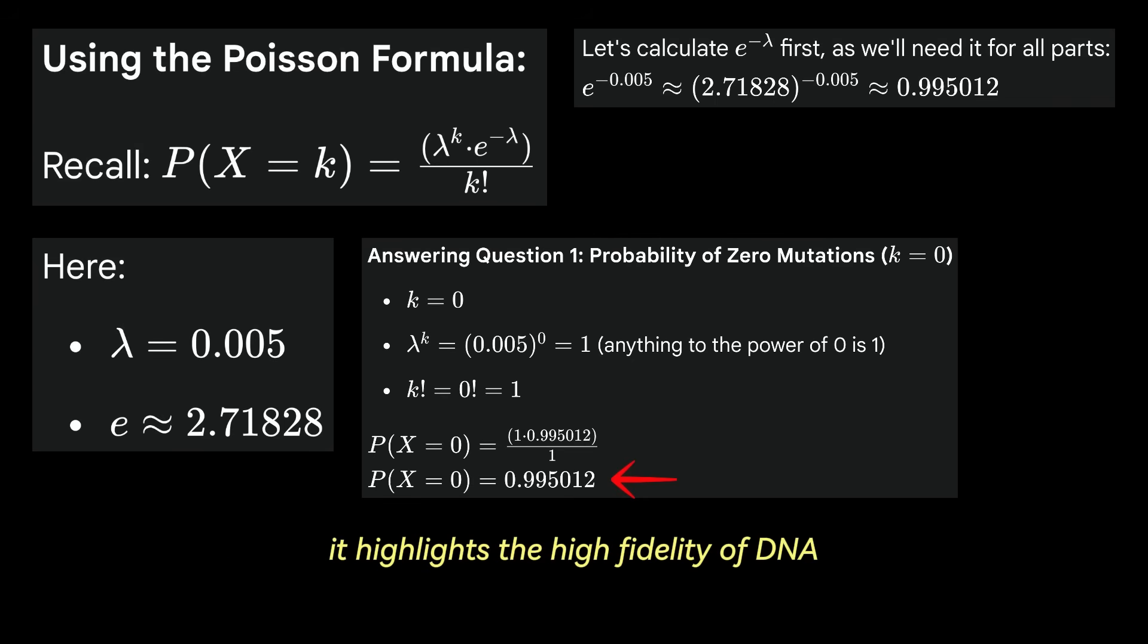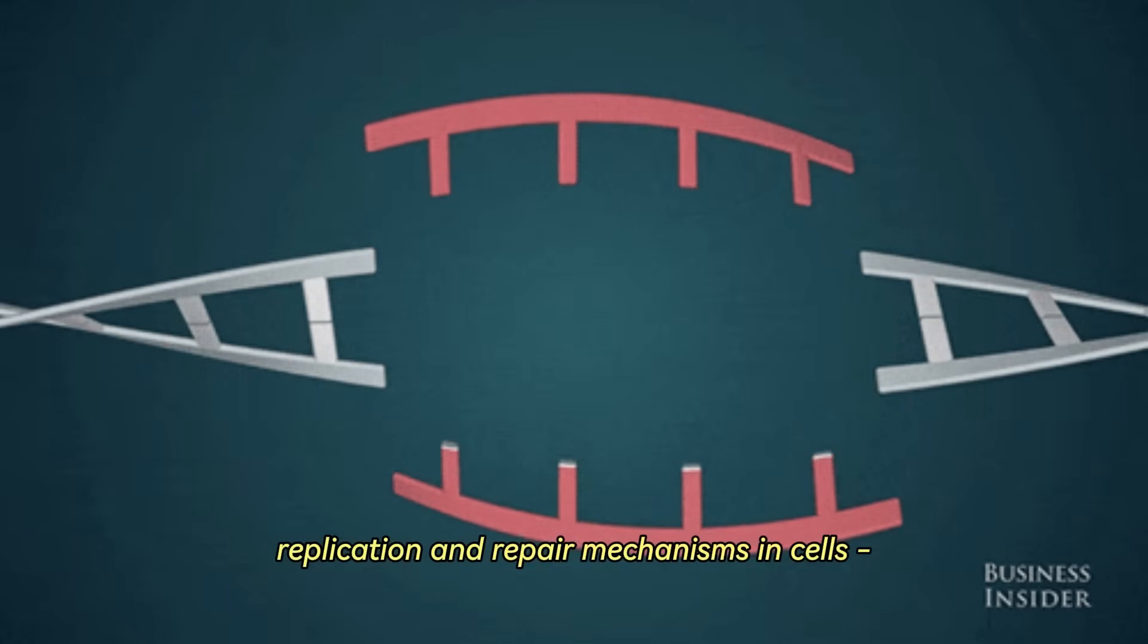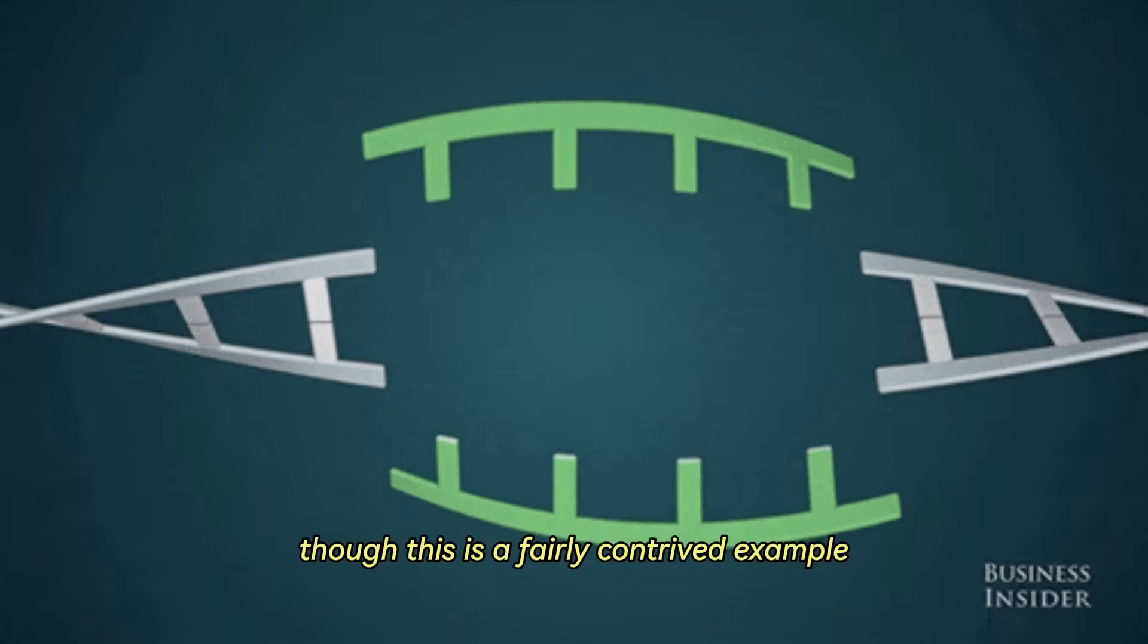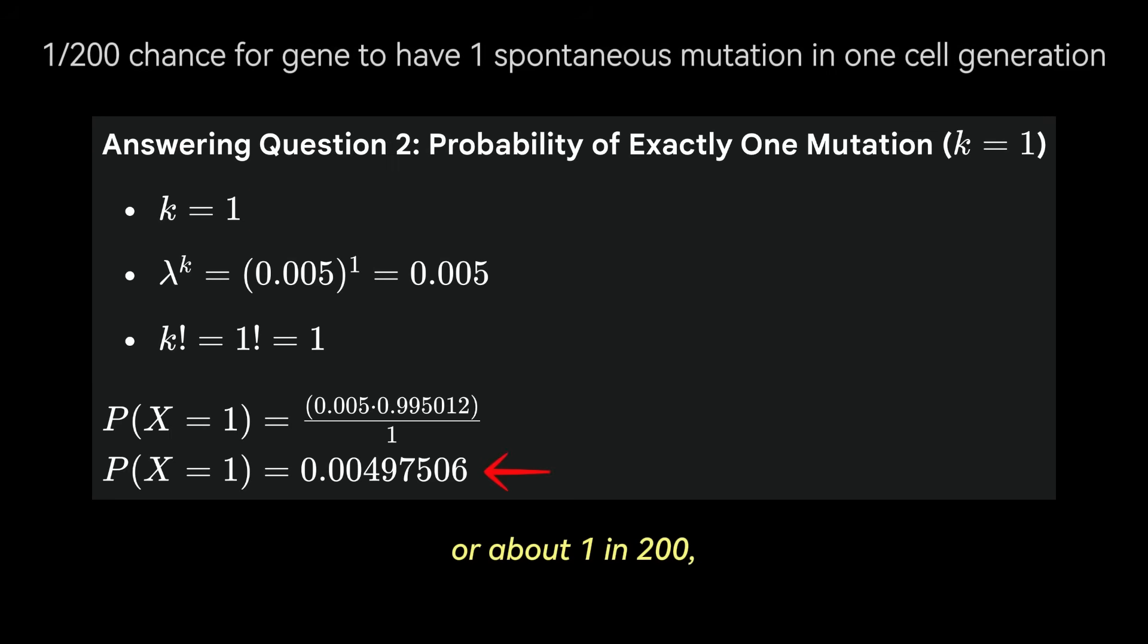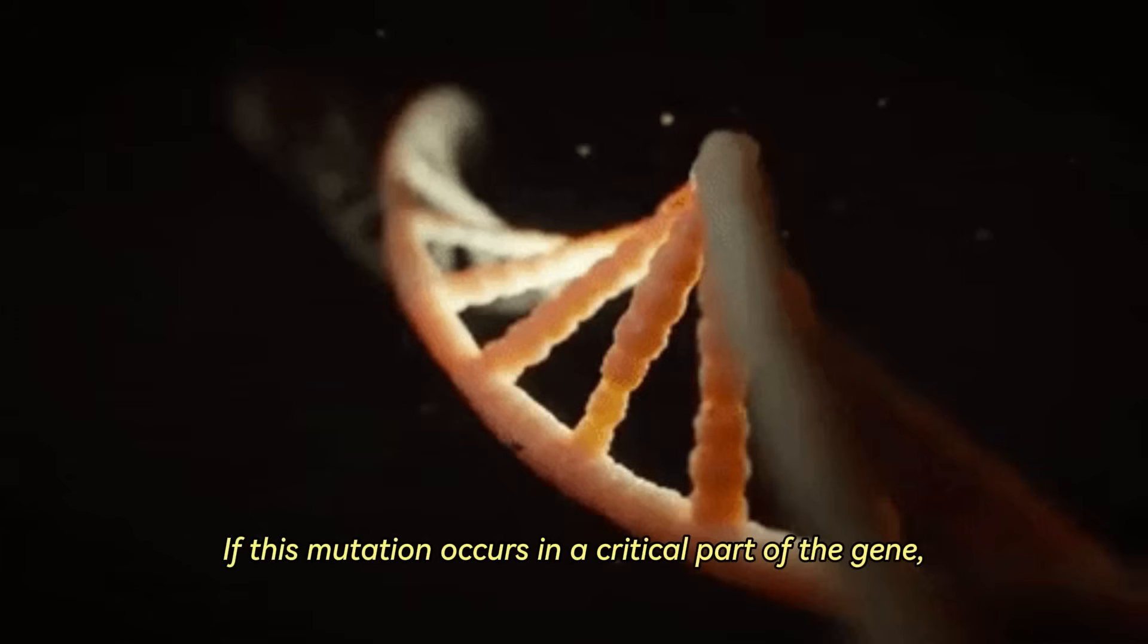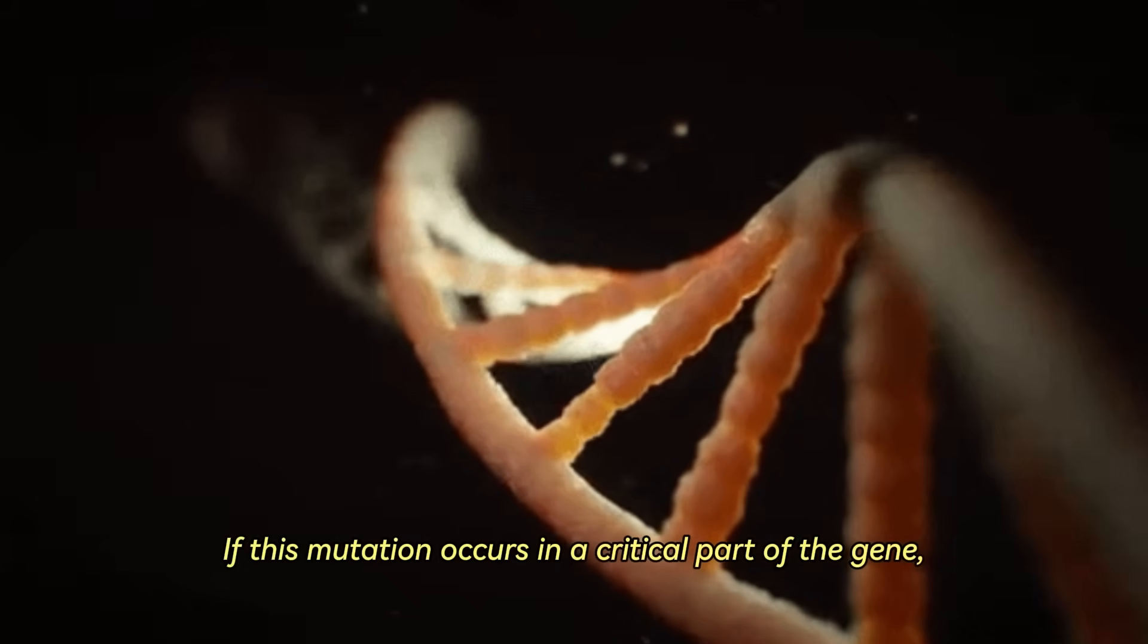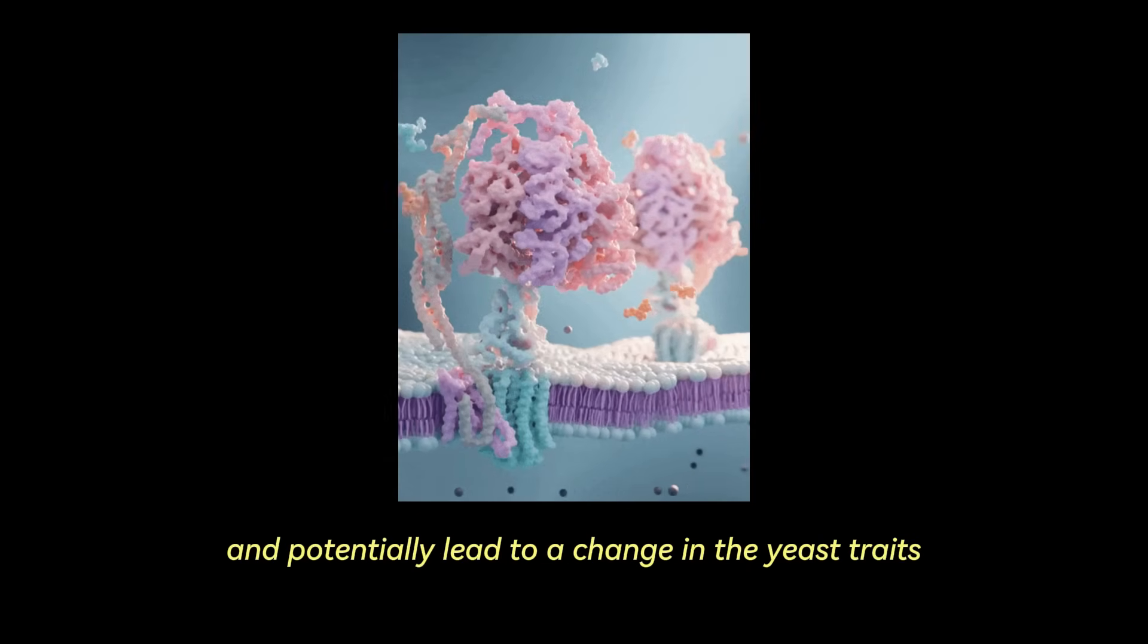This means that there is a 99.5% chance that this specific gene will be perfectly replicated with no new spontaneous mutations in a single cell generation. And in this specific case, it highlights the high fidelity of DNA replication and repair mechanisms in cells, though this is a fairly contrived example. Similarly, we can compute the probability of exactly one mutation, or k equals 1. There is a 0.498% chance, or about 1 in 200, that the gene will acquire exactly one new spontaneous mutation. While low, these single mutations are the raw material for evolution. If this mutation occurs in a critical part of the gene, it could alter the protein it codes for and potentially lead to a change in the yeast's traits.